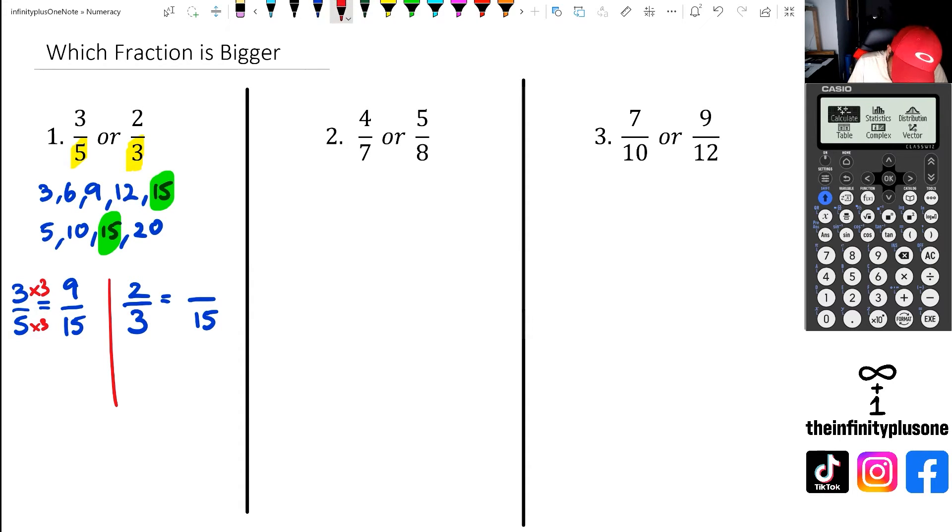So when I do this, I get nine over fifteen. And as for the two-thirds, I'm doing three times five to get fifteen. And so I've got to do two times five for the numerator. And when I do that, I get ten over fifteen. And as you can see, the bigger one between nine over fifteen and ten over fifteen is ten over fifteen. And because ten over fifteen is bigger, we can say that two-thirds is the bigger fraction.